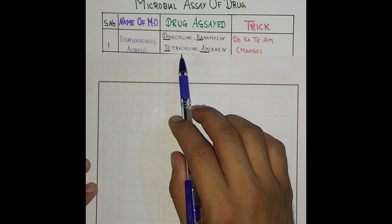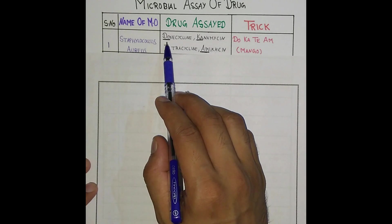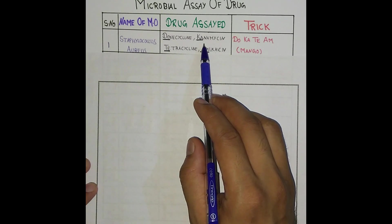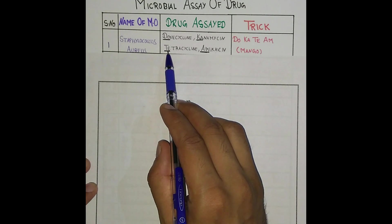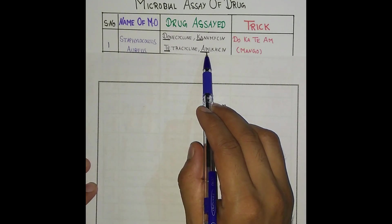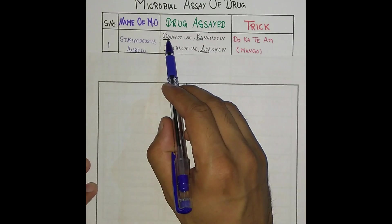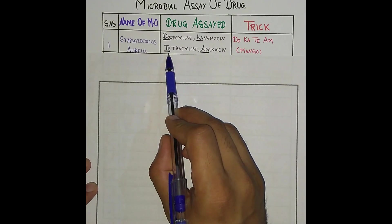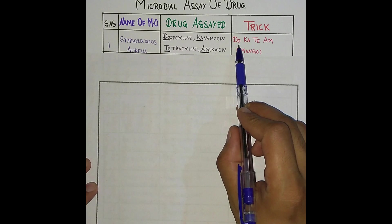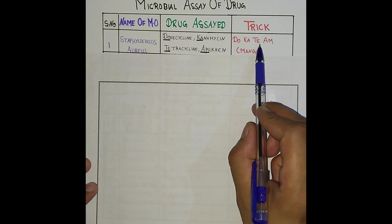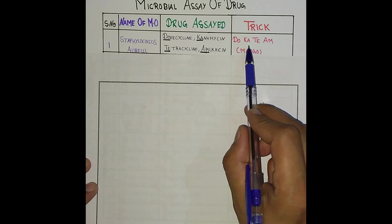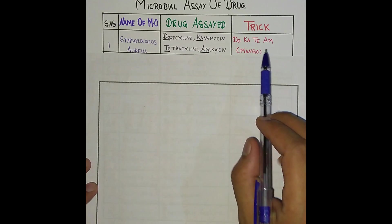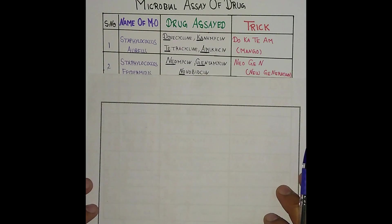To learn these drugs, make a mnemonic: take DO from Doxycycline, KA from Kanamycin, TE from Tetracycline, and AM from Amycicin. So it becomes DO-KA-TE-AM — 'Do Kate Am' — where 'am' means mango. Just remember DO KATE AM using this trick.